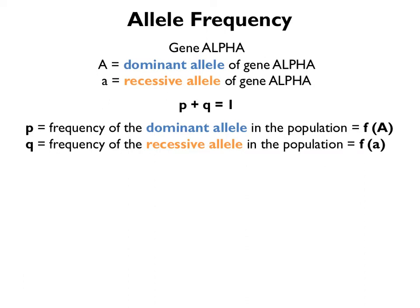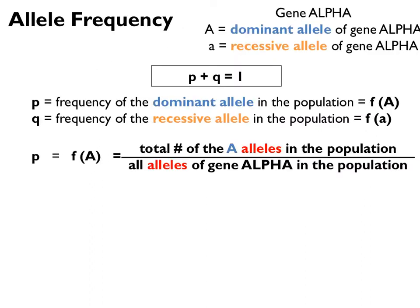So let's look at how you would calculate that frequency. To calculate the frequency of the dominant allele, big A or P, you would want to add up the total number of all A alleles in that population, and then divide that by the total number of all alleles of gene alpha in that population. To add up these alleles, we need to identify the different genotypes that we would find these alleles in.